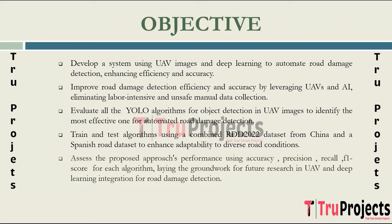The project's final objective is to assess the performance of the proposed approach, measured by accuracy, precision, recall and F1 scores for each algorithm. The successful demonstration of efficiency with notable scores lays the foundation for future research in the integration of UAVs and deep learning for automated road damage detection.